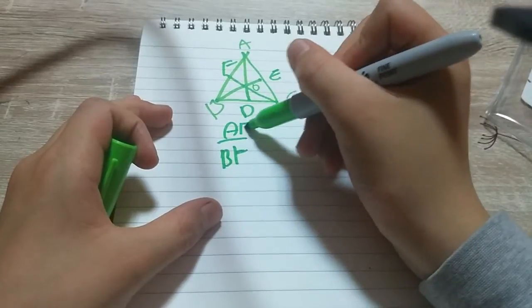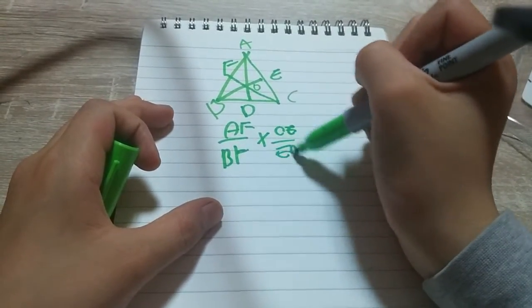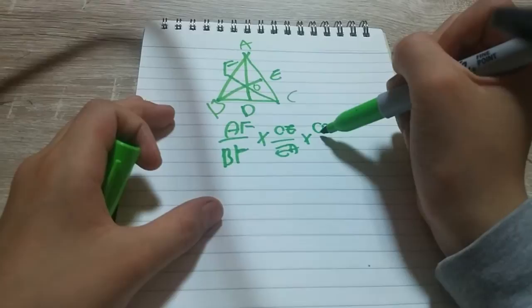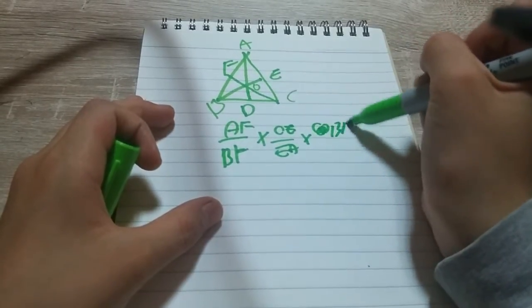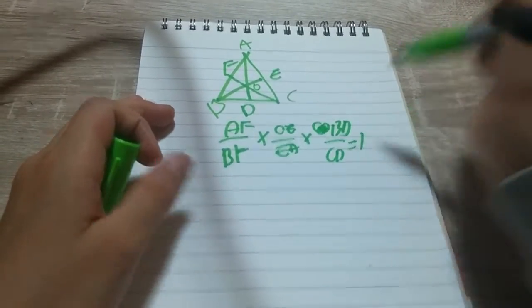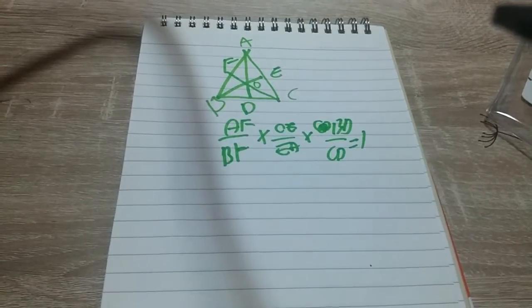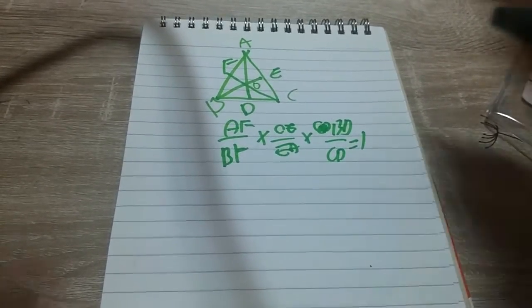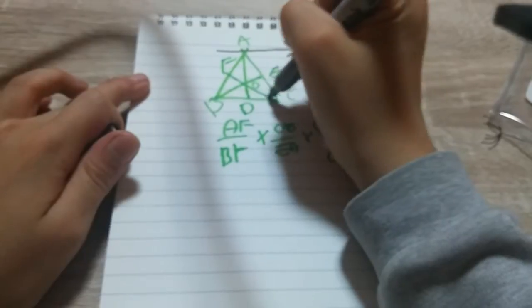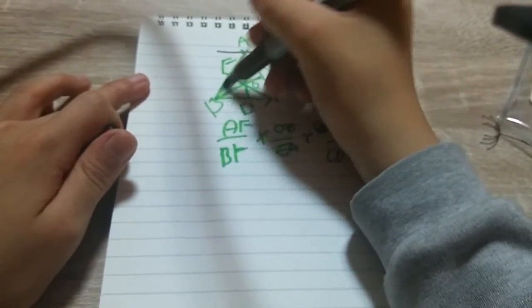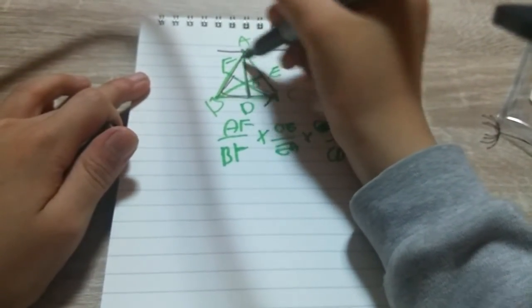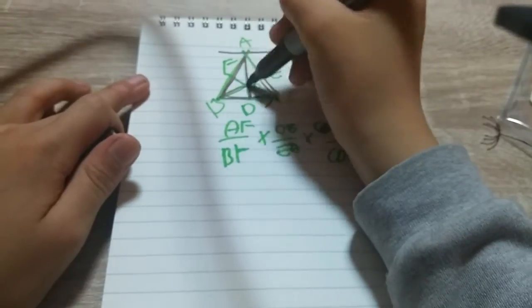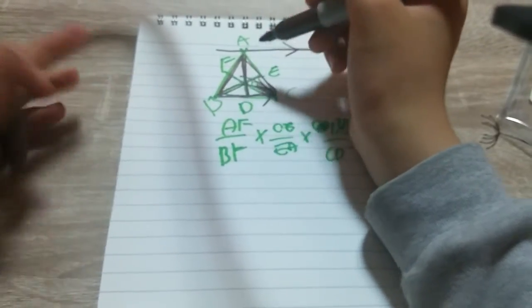AF over BF multiplied by CE over EA multiplied by BD over CD equals one. Now to prove it, there are many proofs. The first one is having a parallel line. The second one is having two Menelaus. The third one, which is having with areas, is much easier.